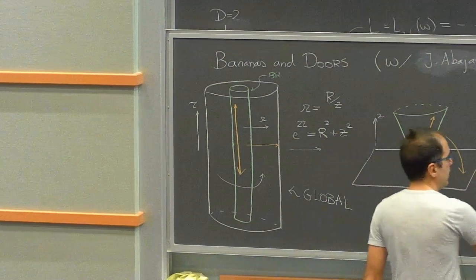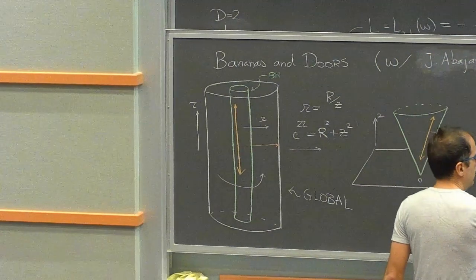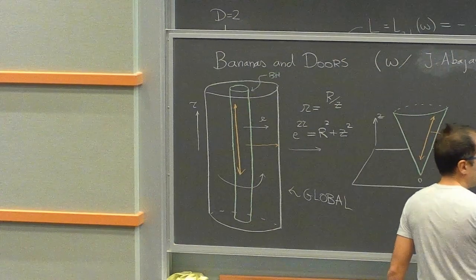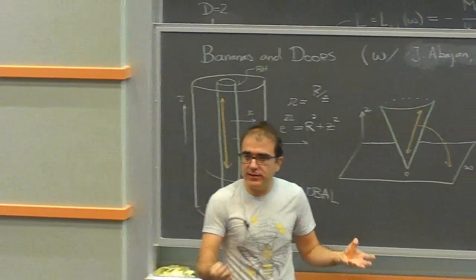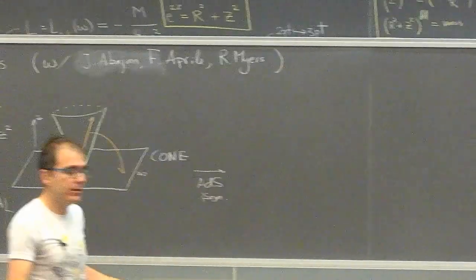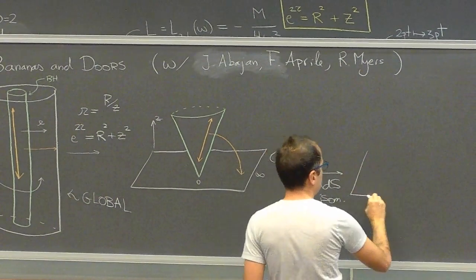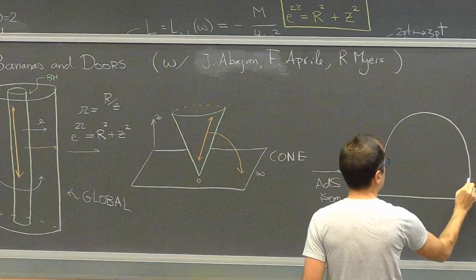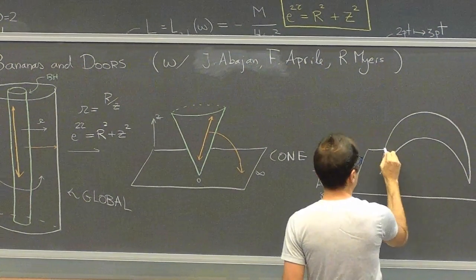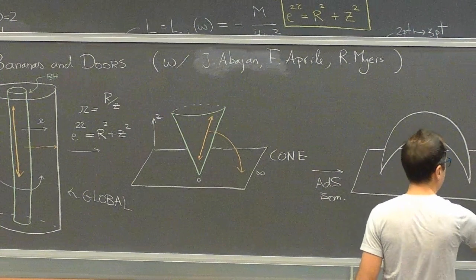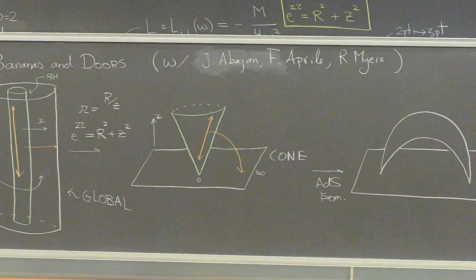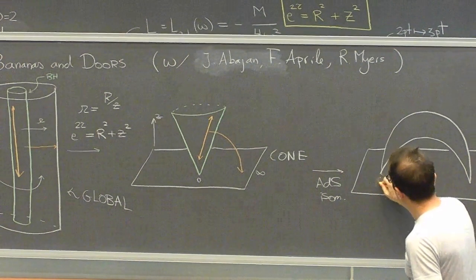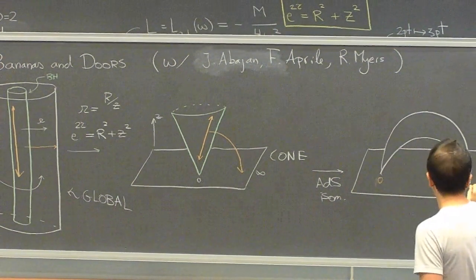So this is how we go from a metric in global AdS. First step: Wick-rotate t to iτ — now we're in Euclidean. Then we do this change of variables and go to the cone metric, where we foliate things not with concentric cylinders but with concentric cones opening wider and wider. Then we can take this metric — operators inserted at zero and infinity — and apply an AdS isometry to go to the banana metric.